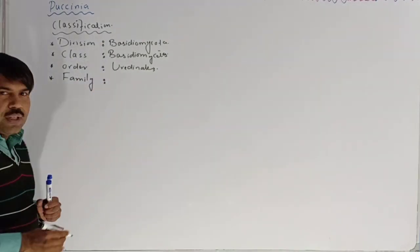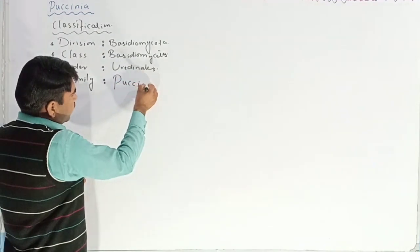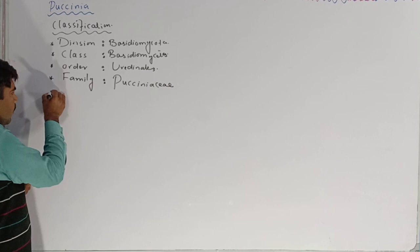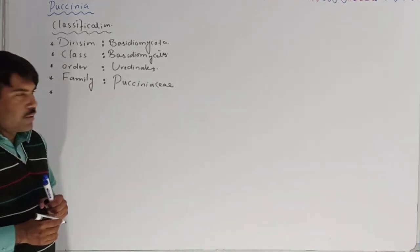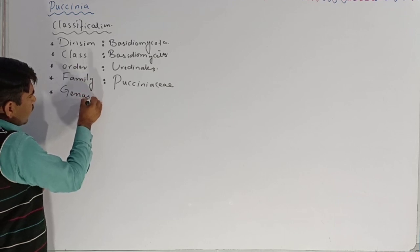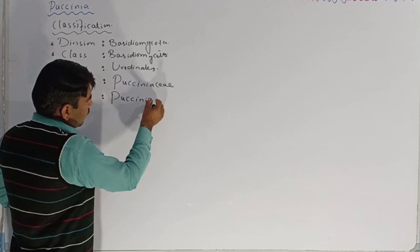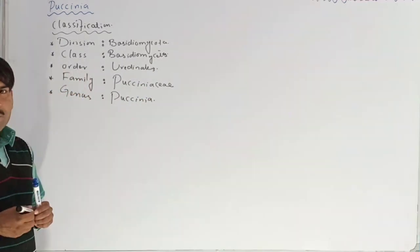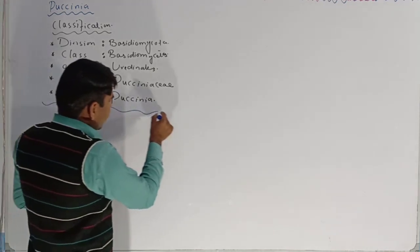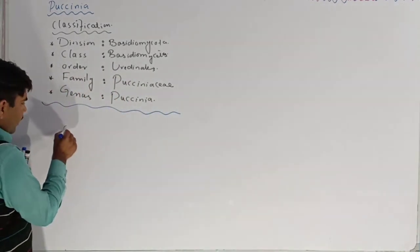After the order, there is a family, and the family name is Paksiniaceae. The genus name is simply Paksinia. After the classification, we are going to discuss about its occurrence.